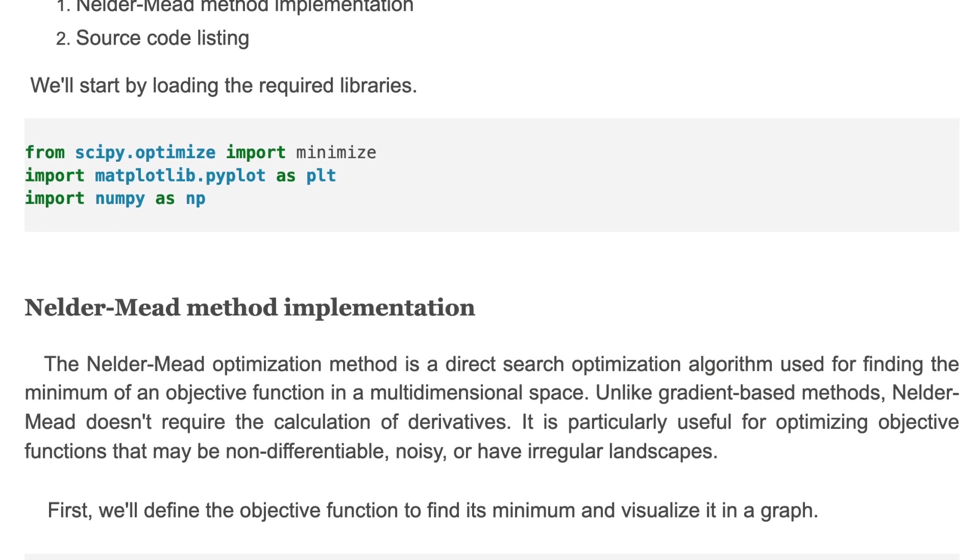Nelder-Mead optimization method is a direct search optimization algorithm used for finding the minimum of an objective function in a multidimensional space. Unlike gradient-based methods, Nelder-Mead doesn't require the calculation of derivatives.